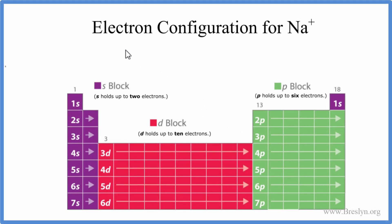In this video, we'll write the electron configuration for Na+, the sodium ion. To do that, we first need to write the electron configuration for just Na, the neutral atom that's found on the periodic table.